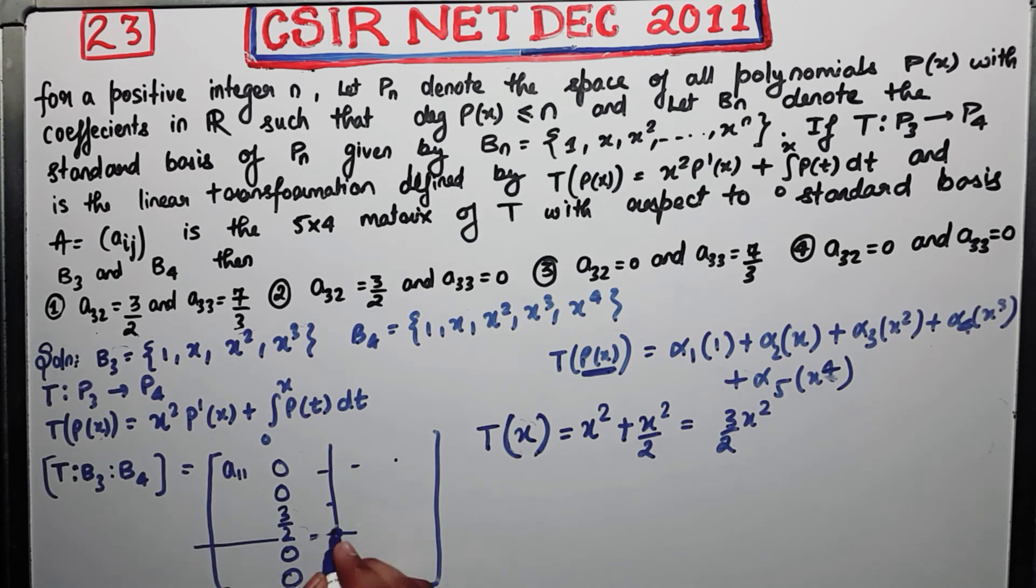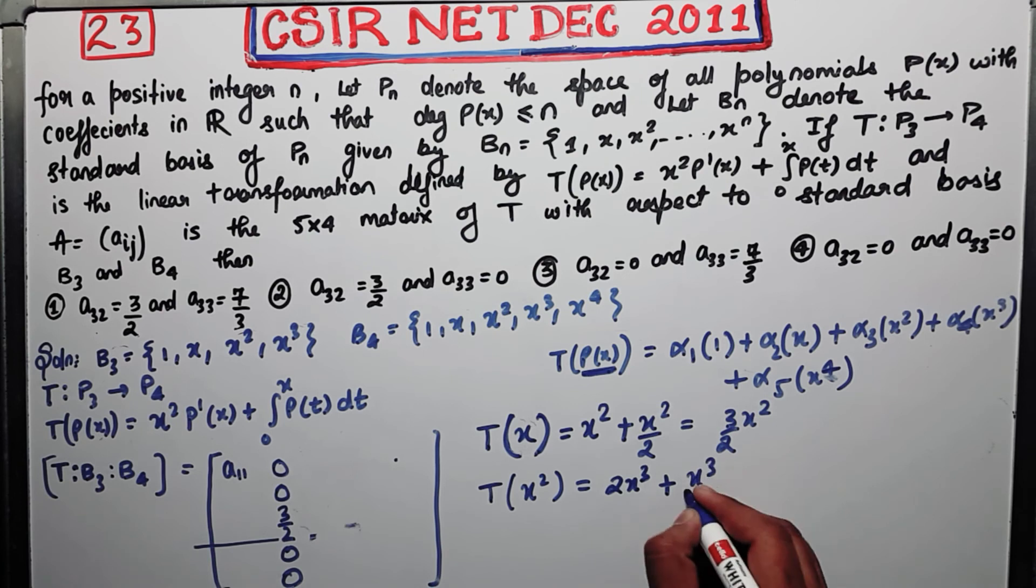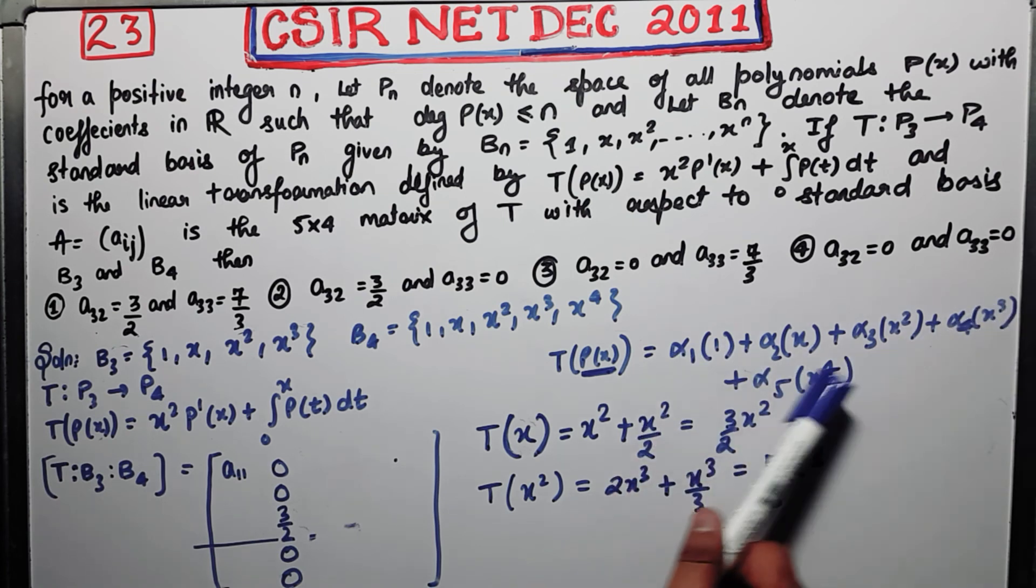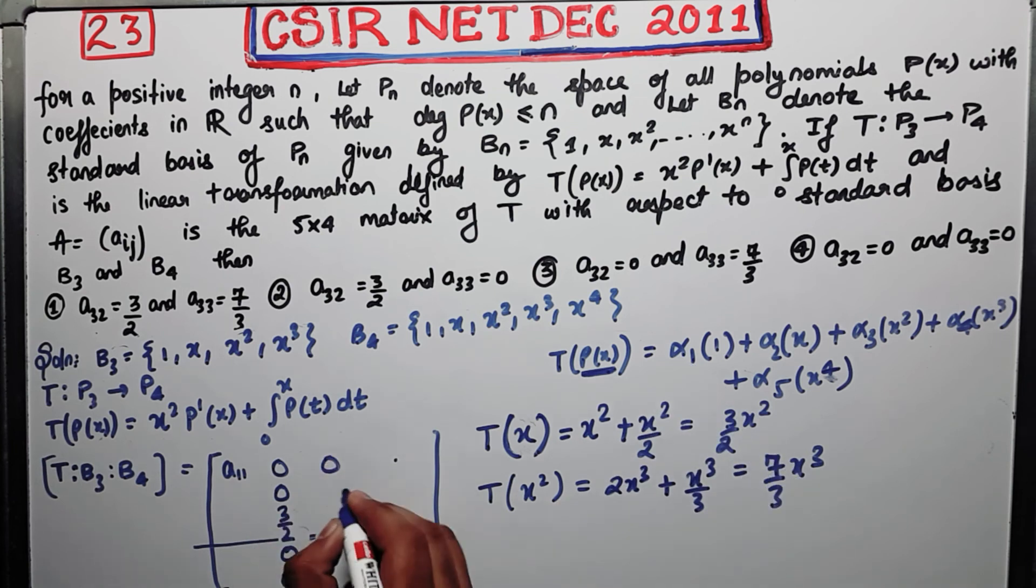Now you need this element also. That means what you have to do, you have to replace it with x². So if you replace it with x², now your p(x) is x². So its differentiation will be 2x. Therefore after multiplying you will get 2x³. Now after integrating, what is your p(t)? Your p(t) is t², so after integrating you will get x³ over 3. So now what is this? This is 7/3 x³.